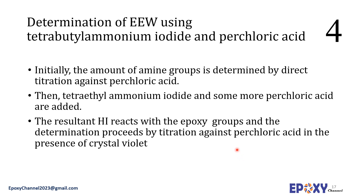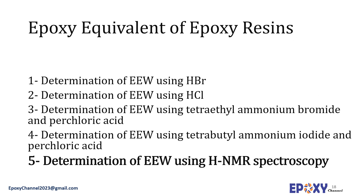The tetraethylammonium iodide method is similar to the former one but the titrant is changed. Initially, the amount of amine group is determined by direct titration against perchloric acid; then tetraethylammonium iodide and more perchloric acid are added. The resultant HClO4 reacts with the epoxy groups and the determination proceeds by titration against perchloric acid in the presence of crystal violet.